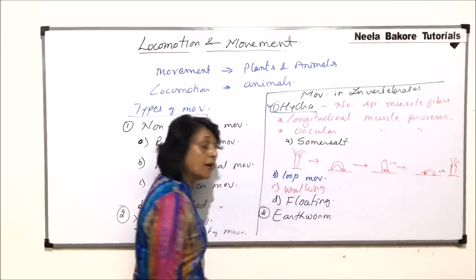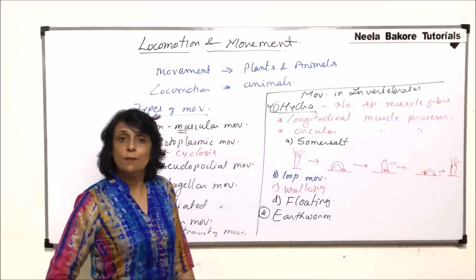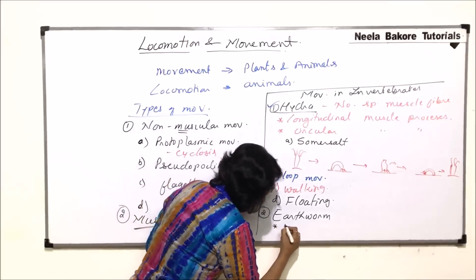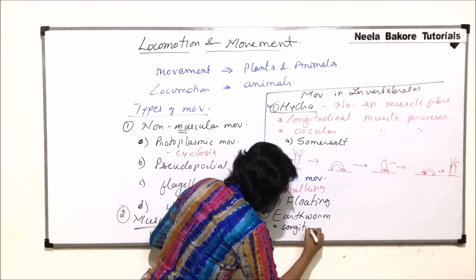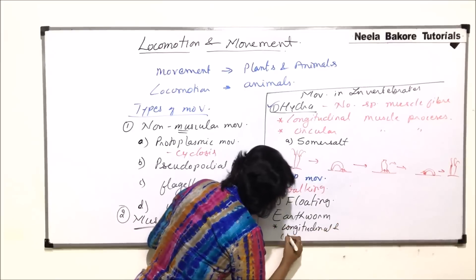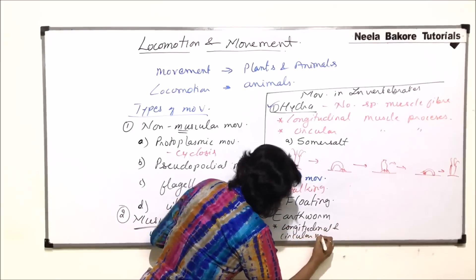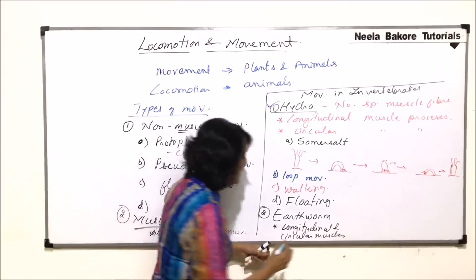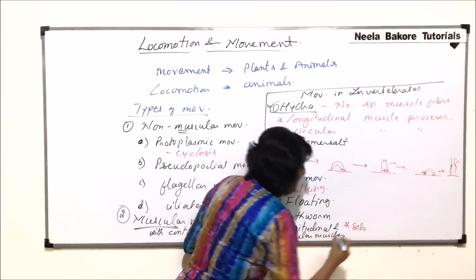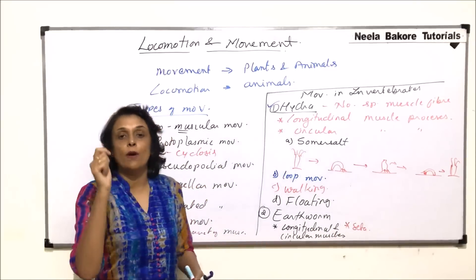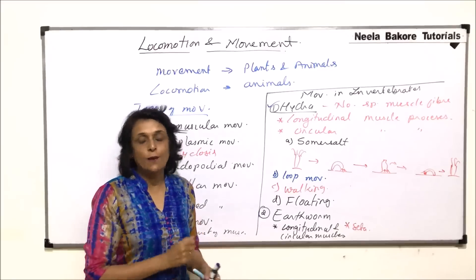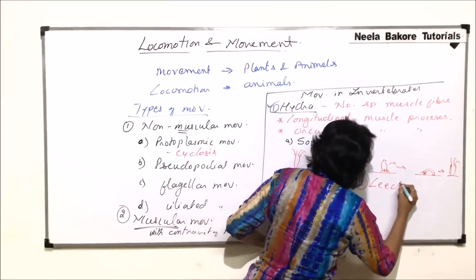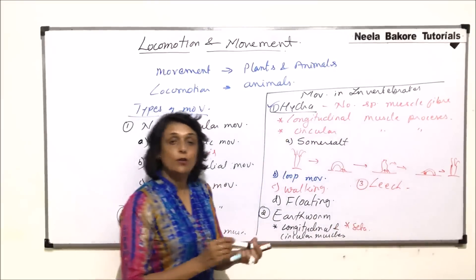In the case of earthworm, longitudinal and circular muscles are present. Locomotion and movement take place with the help of contraction of these longitudinal and circular muscles. One more thing which helps earthworms to move is setae — pointed structures which help them anchor to the substratum.